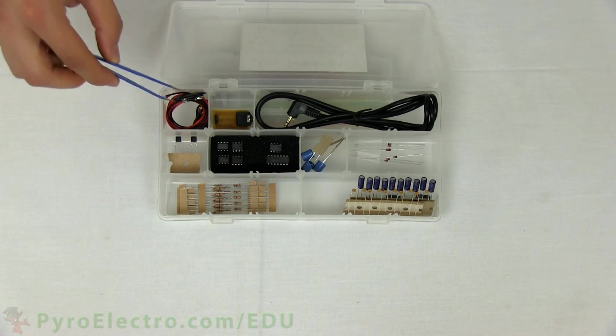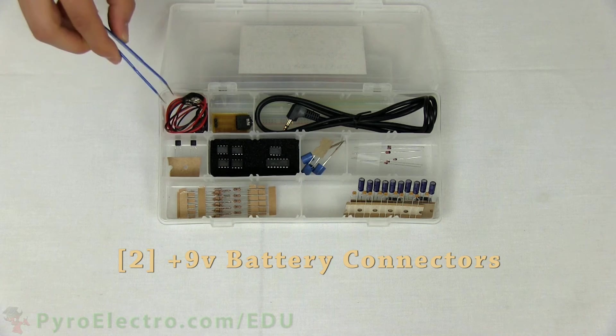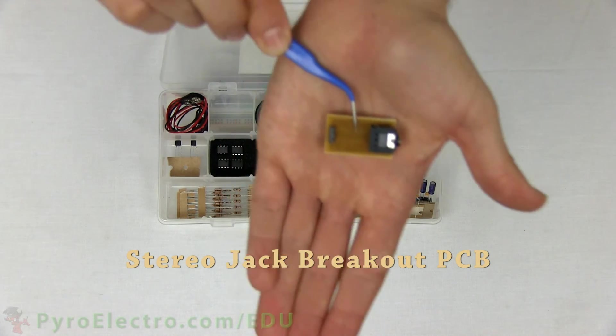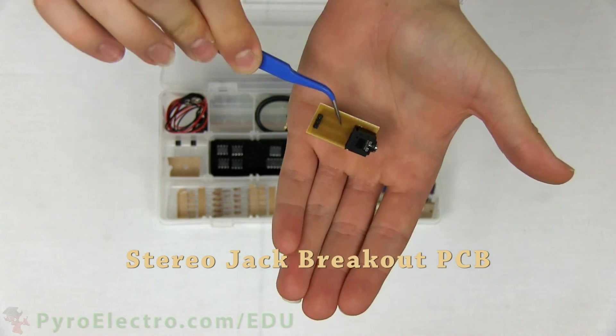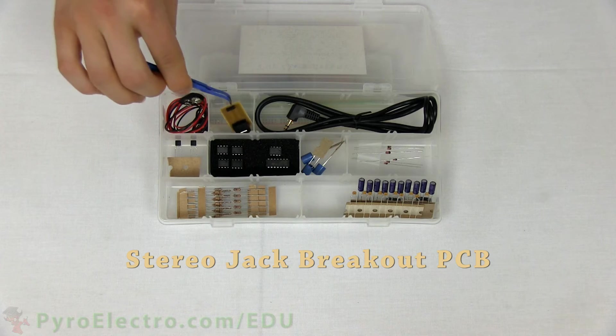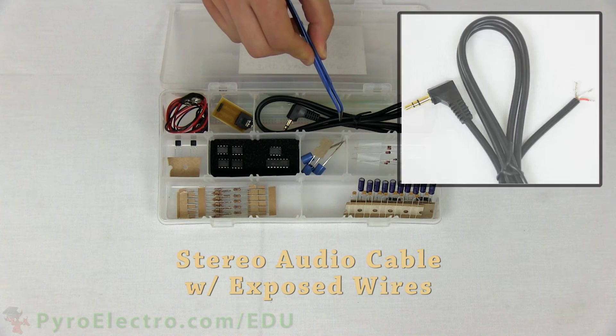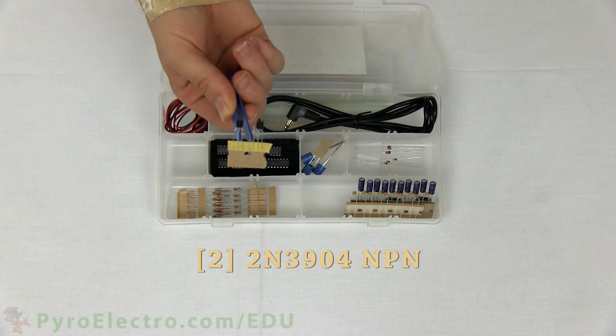In the components kit, we have two 9-volt battery connectors, a headphone audio jack breakout board, an audio cable, and two NPN-style transistors.